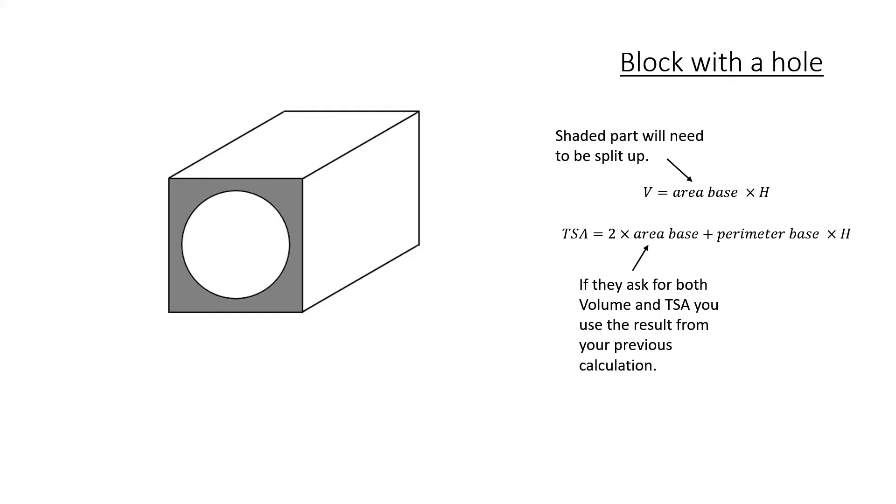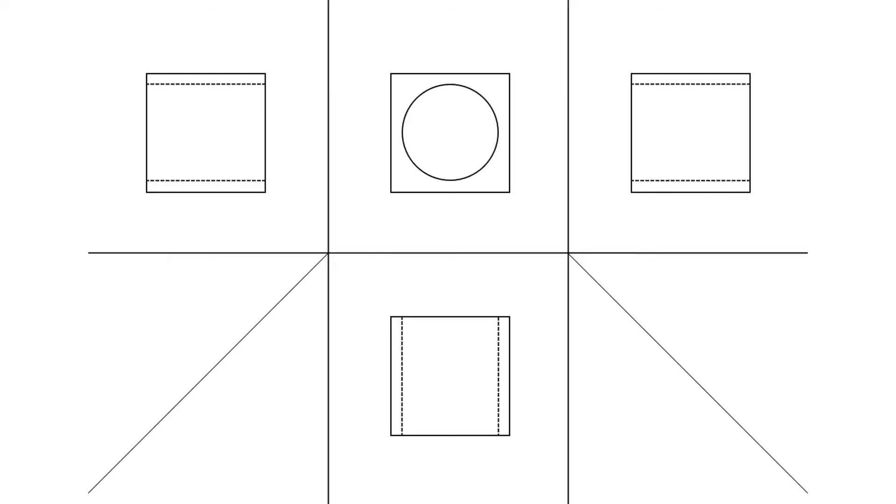Now, this one's a little bit different, I'm just going to take a look at the split up view here. If I'm looking at it from the front, we've got the hole cut in the block here, so that would be the shaded part there. And this just shows, from the left and the right, that the hole goes all the way through.